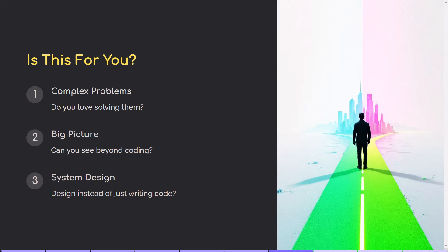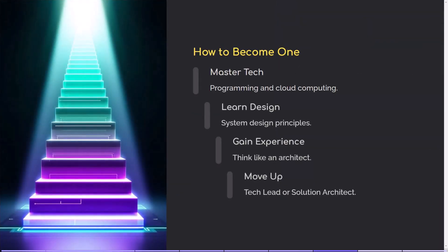So how do you actually become a technical architect? Here's a simple roadmap. One: master the fundamentals — you need strong experience in programming, databases, APIs, and cloud computing, think AWS, Azure, or Google Cloud. Two: learn system design — understand how big tech companies structure their software. Books like Designing Data-Intensive Applications are a great start.